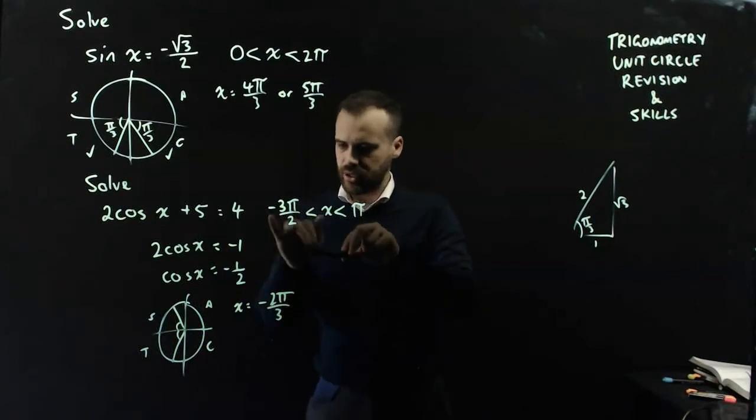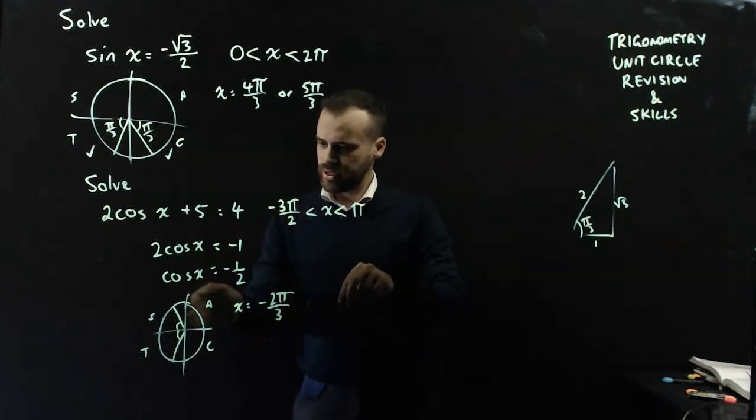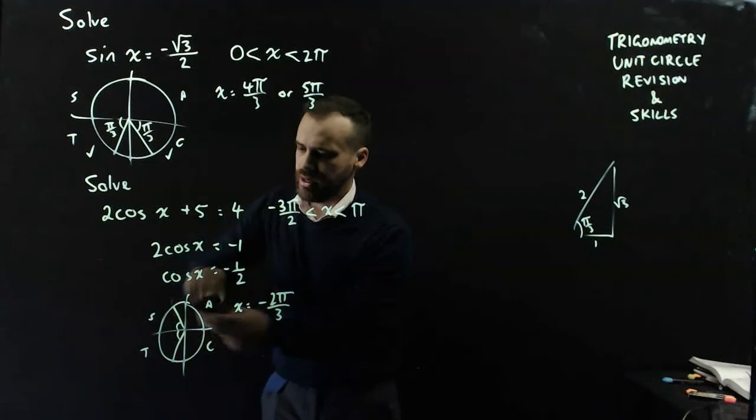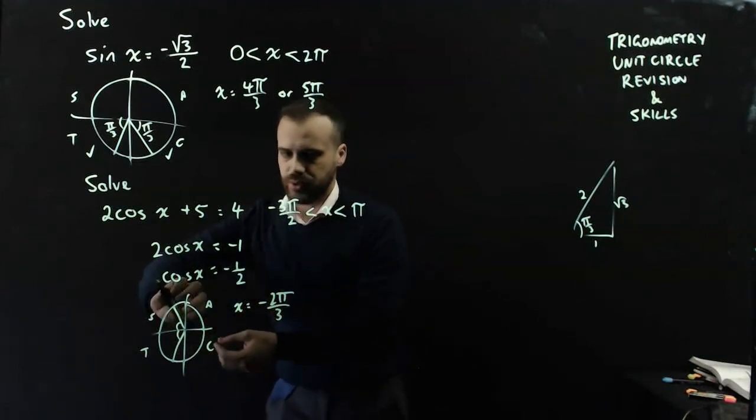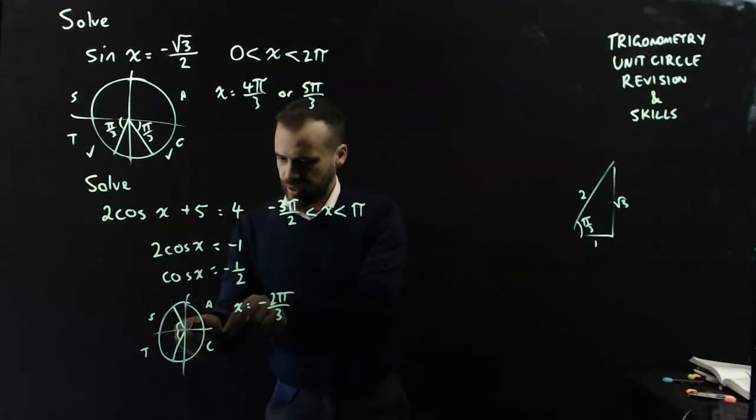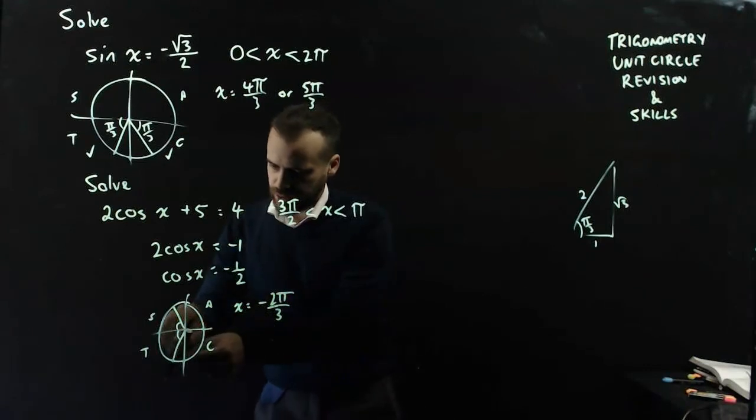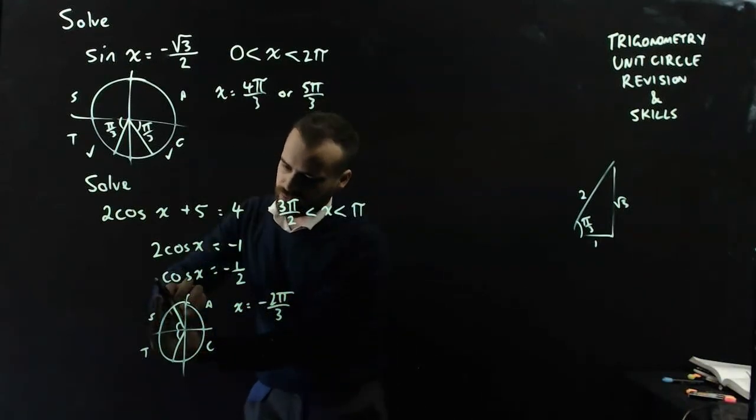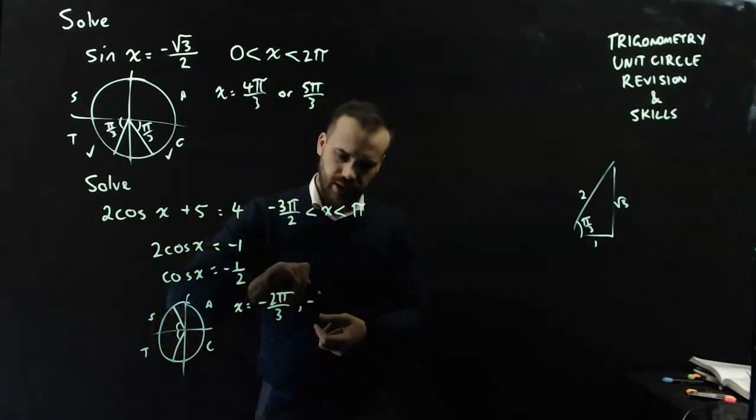And then I need to keep going, because negative 3π on 2 is up there, like all the way around to there. So, I can get to that answer as well. So, we'll go to that answer as well. Negative π on 3, negative 2π on 3, negative 3π on 3, negative 4π on 3. Negative 4π on 3.